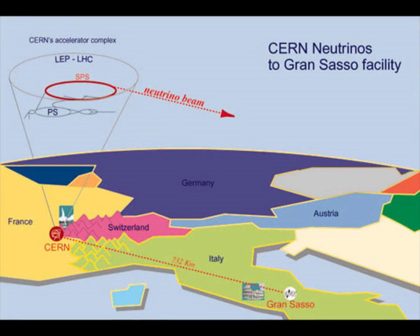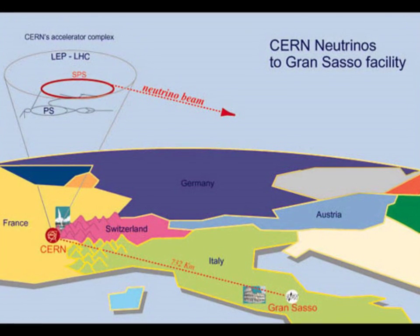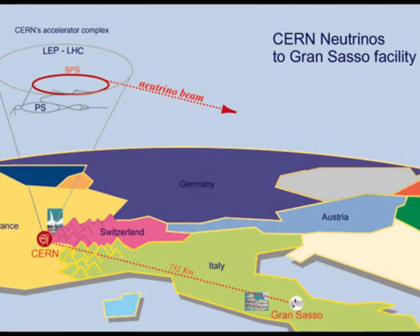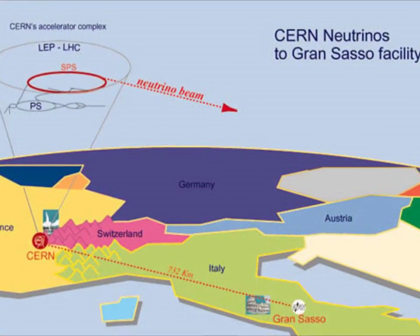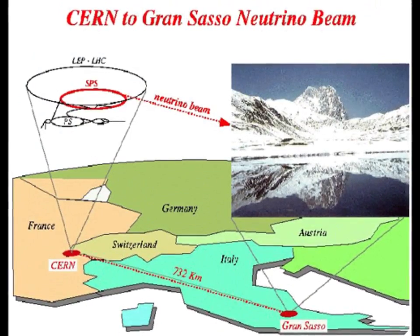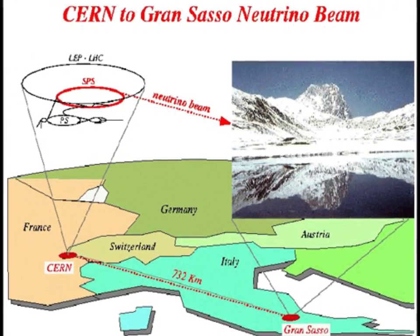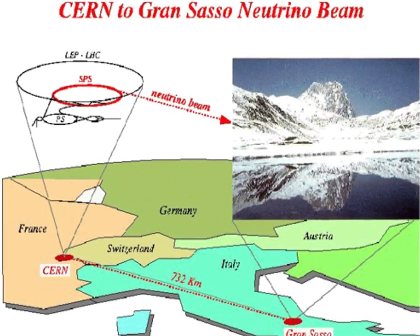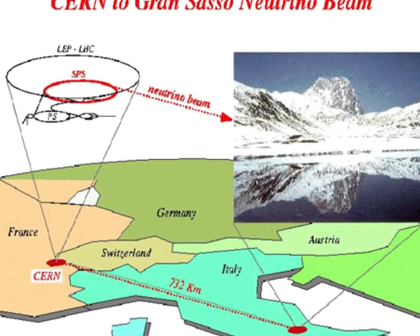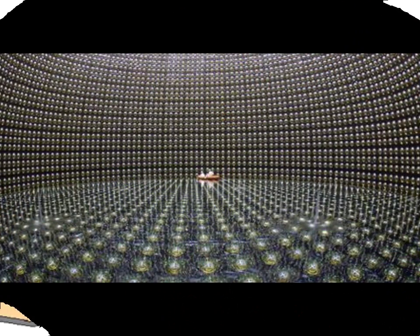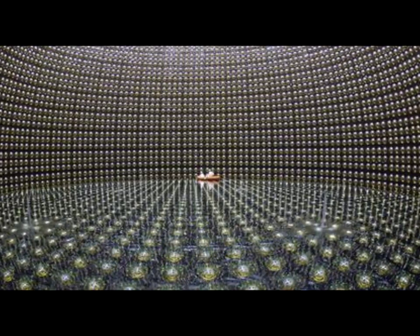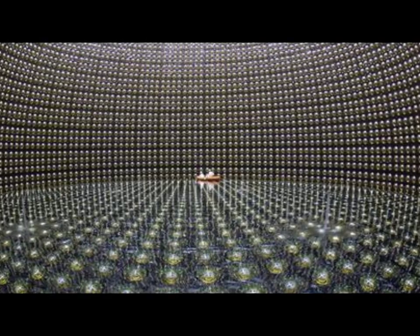The neutrino was used by Enrico Fermi in 1934 as part of his comprehensive theory of radioactive decay. However, it wasn't until 1956 that scientists experimentally detected the neutrino. Clyde Cowan and Frederick Reines of the Los Alamos National Laboratory set up equipment near a South Carolina nuclear reactor and managed to capture the track of an anti-neutrino. Reines won the 1995 Nobel Prize in Physics for that discovery. Cowan had died in 1974.